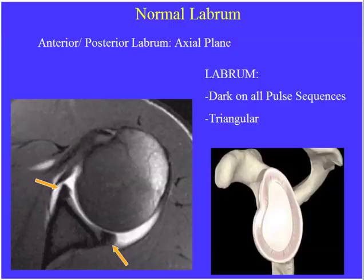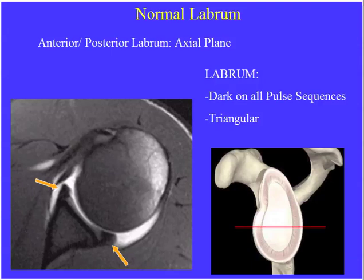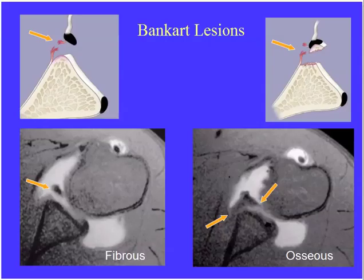They may also show a labral lesion associated with dislocation on an axial MR image through the glenohumeral joint — either a Bankart or reverse Bankart lesion. The normal labrum is dark and triangular, firmly attached to the glenoid — dark because it's made of fibrocartilage. Hyaline cartilage is intermediate in signal. We shouldn't see fluid coming deep into the substance of that triangle. With an osseous Bankart lesion, we see displacement with fluid between the osseous glenoid and the fibrous labrum. They might ask for the diagnosis — Bankart lesion — or the mechanism, which is anterior dislocation.